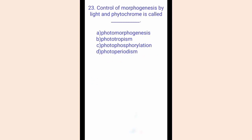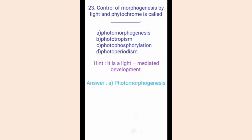Question twenty-three. Control of morphogenesis by light and phytochrome is called dash. The options are A. Photomorphogenesis, B. Phototropism, C. Photophosphorylation, D. Photoperiodism. The hint is it is light-mediated development, where plant growth patterns respond to the light spectrum. The correct answer is option A, Photomorphogenesis.